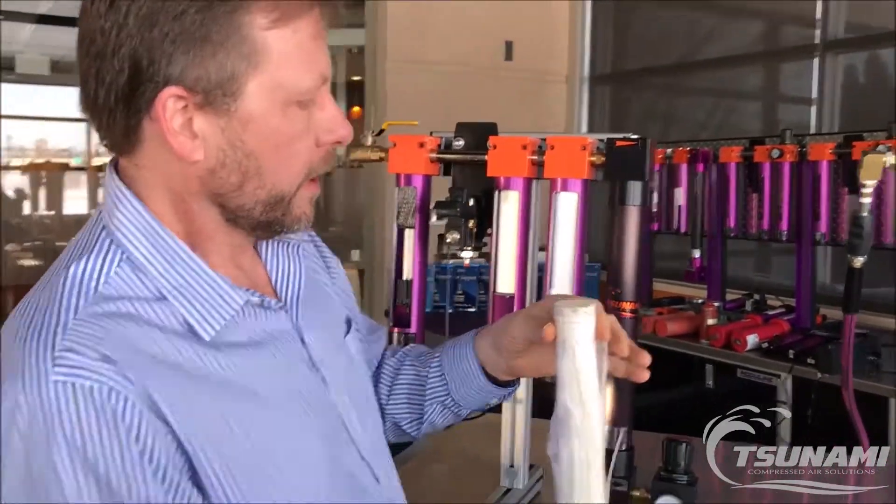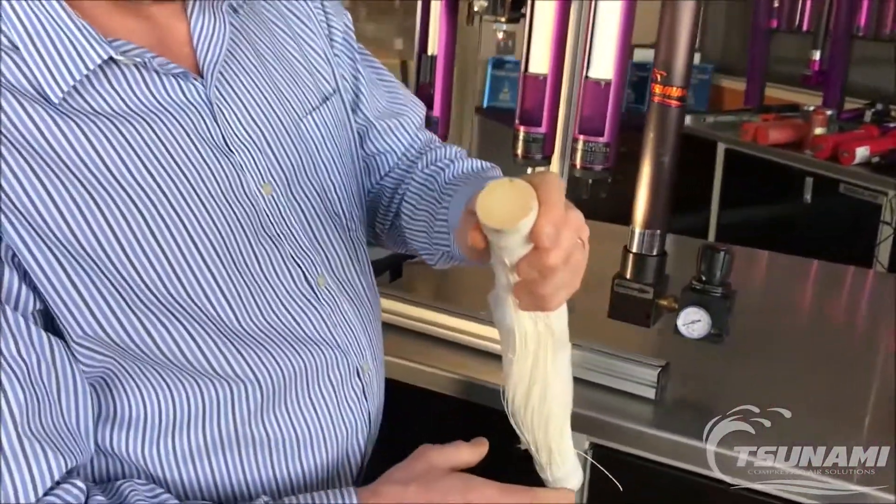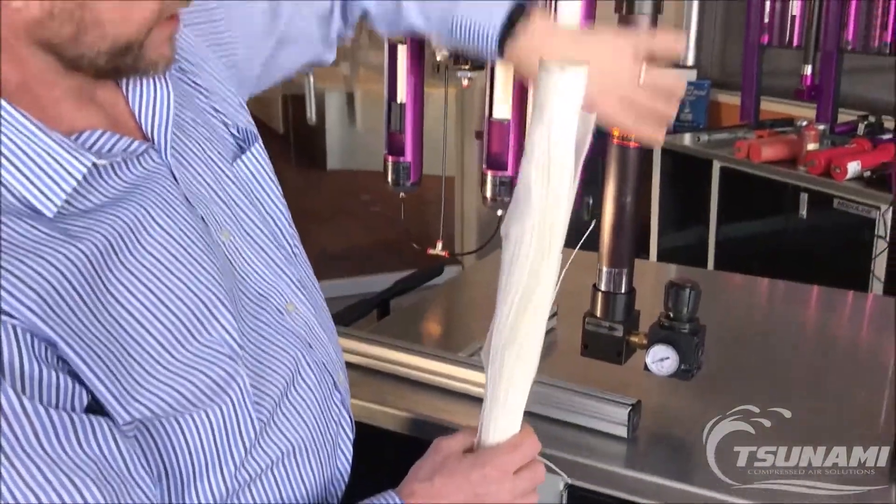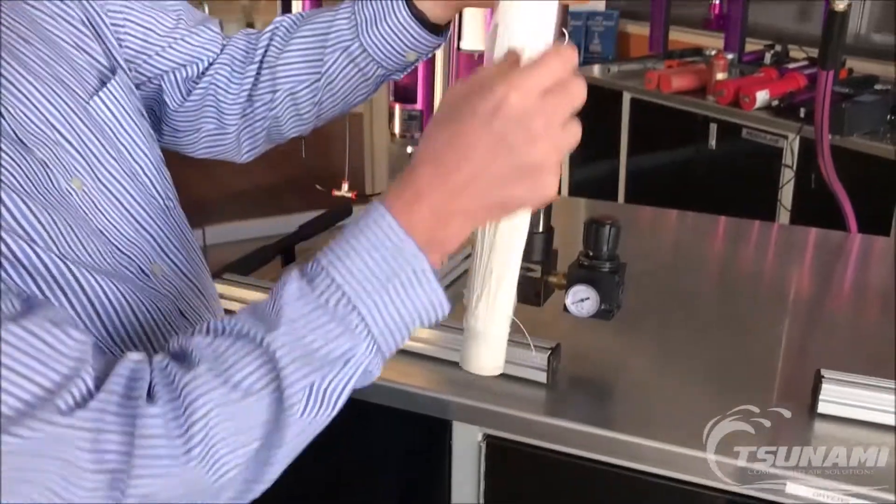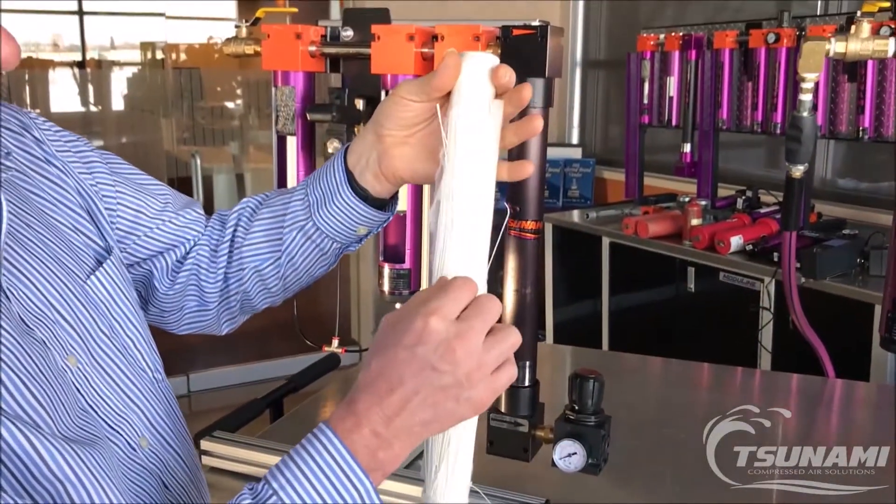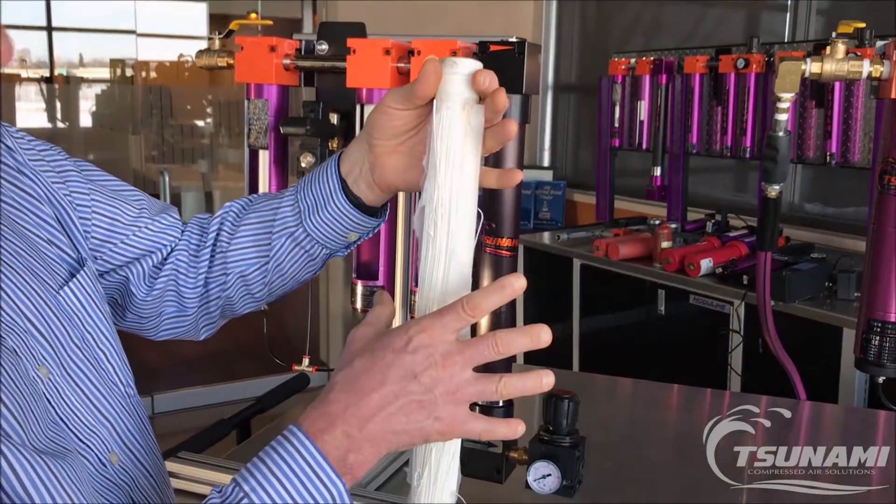The membrane dryer core is made up of a bunch of hollow tubes which are epoxied at the top and the bottom and loose in the middle. As compressed air is traveling down through these tubes, the chemical makeup of the material allows water vapor to permeate through.